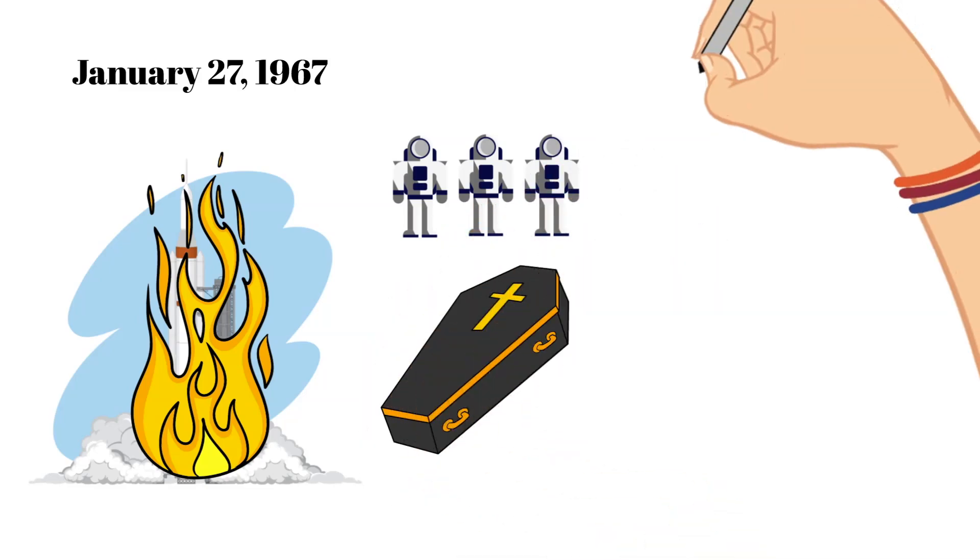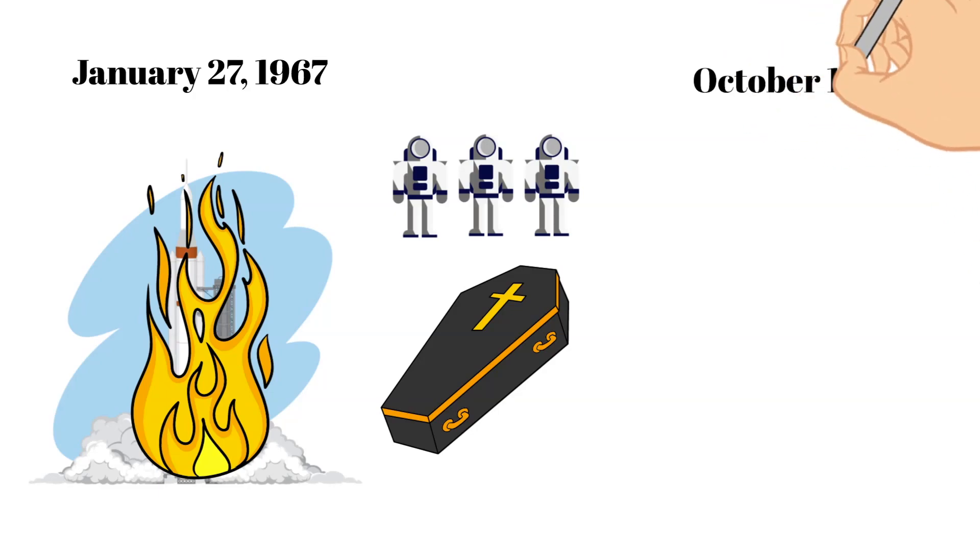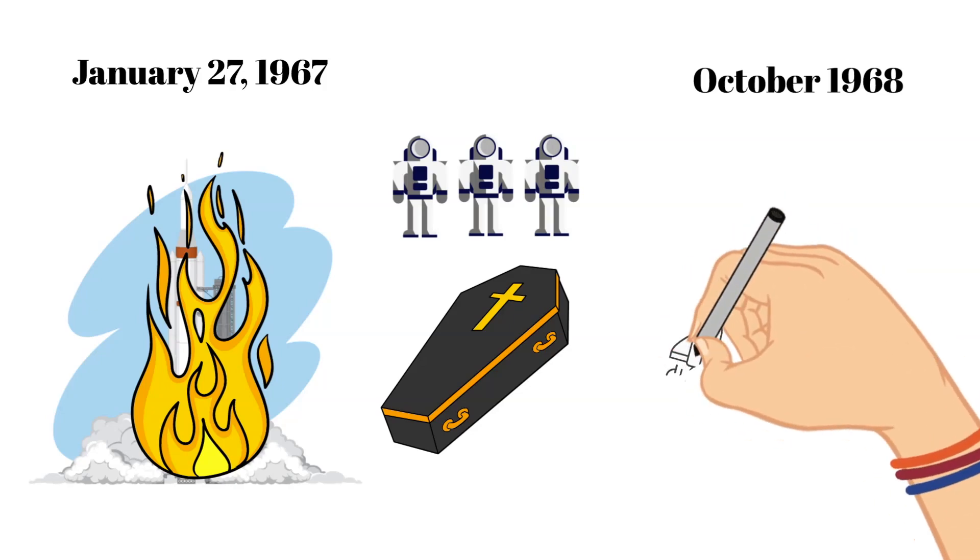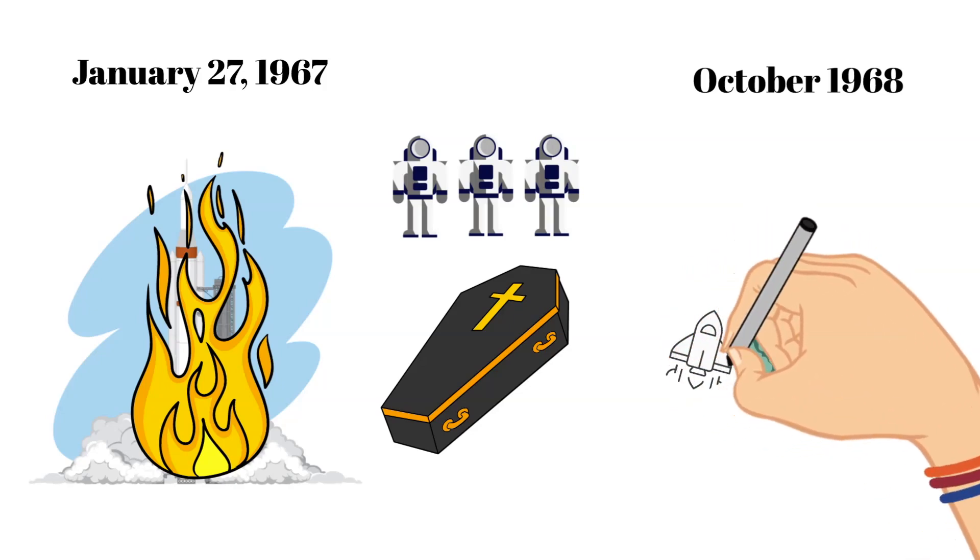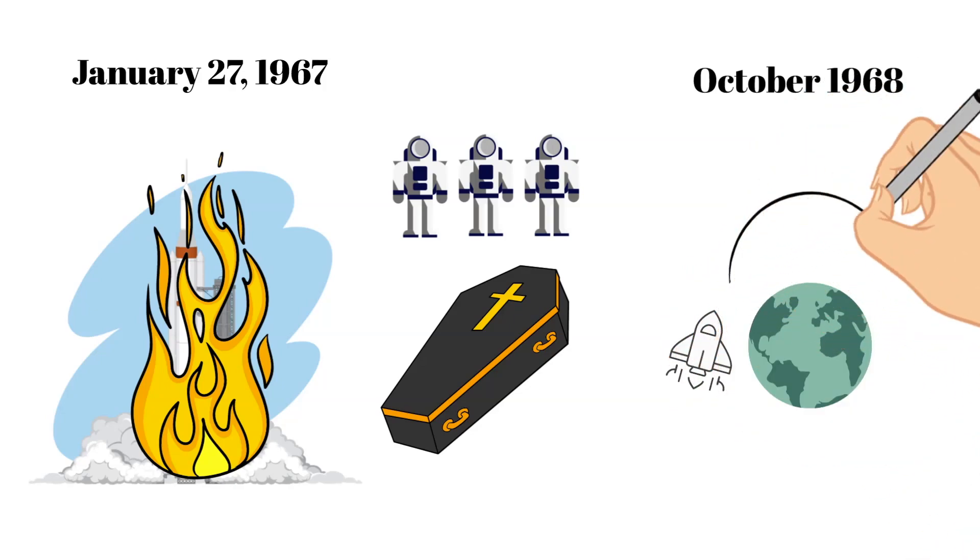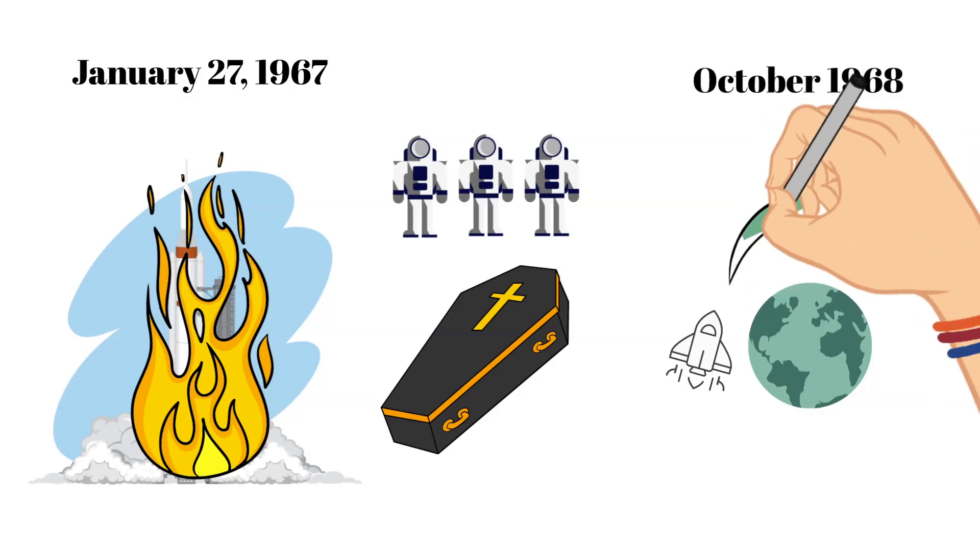This was a major setback for NASA, but they continued on. And in October of 1968, Apollo 7, which was the first manned Apollo mission, orbited Earth and then successfully tested many of the systems needed to go to the moon.